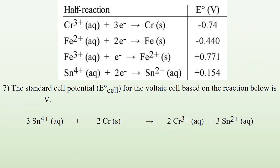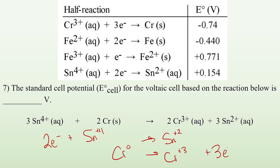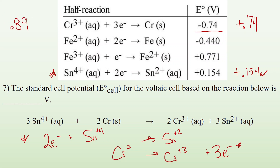Number 7: the standard cell potential. We've got tin — Sn⁴⁺ becoming Sn²⁺. It must have gained two electrons — that's reduction. I find that on the chart: positive 0.154 volts. And then chromium — CR was zero and became CR³⁺, must have lost three electrons. I find the reduction version: it's negative 0.74. But because I'm talking about oxidation, the opposite process, the number stays the same but I change the sign. Combining these terms together, I end up with 0.894 volts.